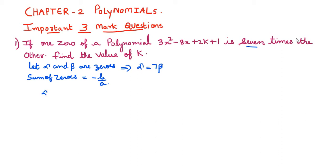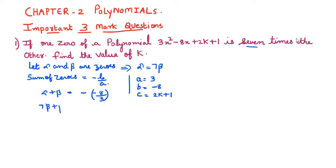We apply the sum of zeros formula: alpha plus beta equals minus b by a. Here a is 3 (coefficient of x²), b is minus 8, and c is 2k plus 1. So alpha plus beta equals minus(minus 8) by 3. Substituting alpha = 7 beta: 7 beta plus beta equals 8 by 3, giving 8 beta equals 8 by 3.